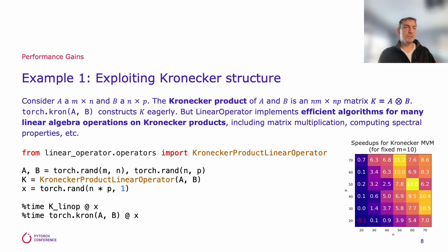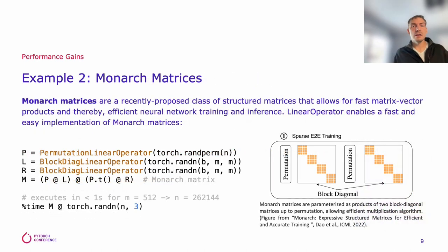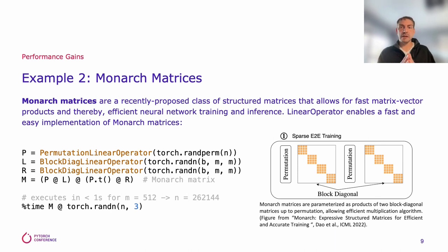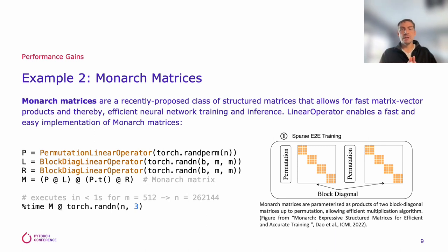Memory consumption improves similarly. The second example is so-called monarch matrices. These are matrices parameterized as the product of two block diagonal matrices plus some permutations. They were proposed recently — there's an ICML paper from this year — to make neural network training and inference more efficient. With Linear Operator, implementing such algorithms is just a few lines of code, which illustrates how we can utilize this package to quickly and simply implement new research ideas by composing primitives.